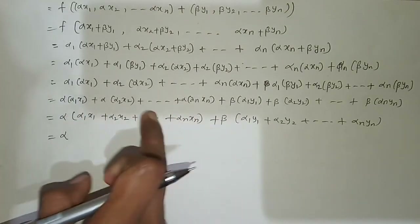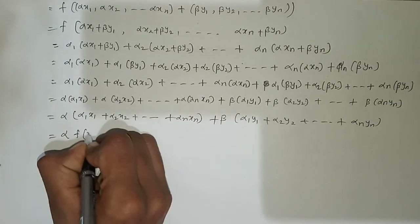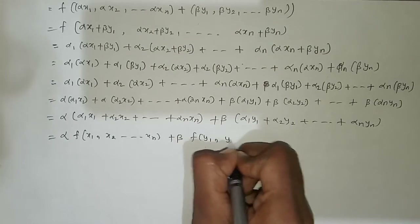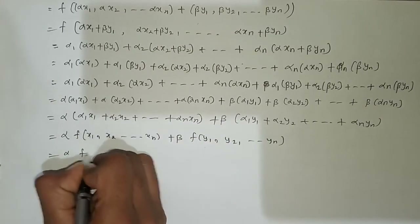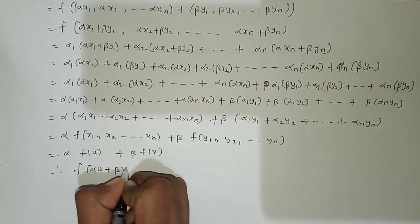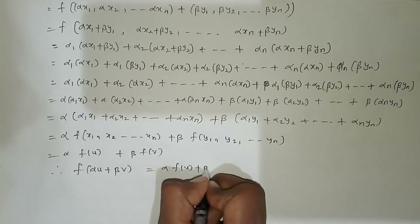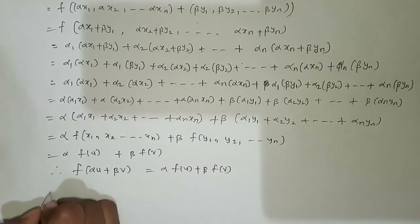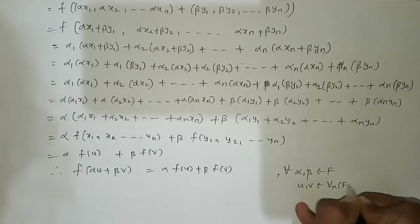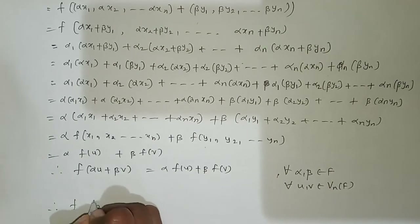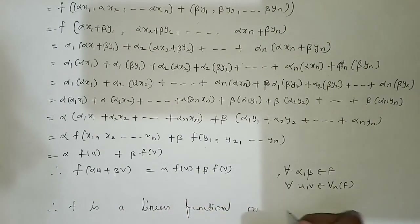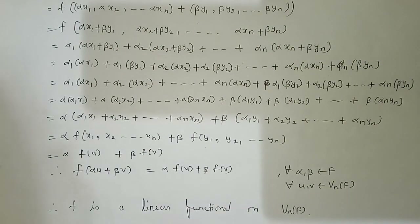We can see that (α1·x1 + α2·x2 + ... + αn·xn) is nothing but f(x1, x2, ..., xn) = f(u), and (α1·y1 + α2·y2 + ... + αn·yn) is nothing but f(y1, y2, ..., yn) = f(v). Therefore f(αu + βv) = α·f(u) + β·f(v), for all α, β in F and u, v in Vn(F). Hence we conclude that f is a linear functional on Vn(F).